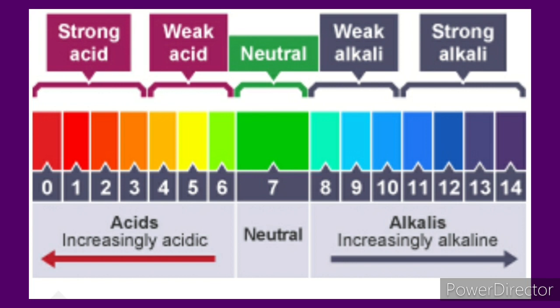The pH scale ranges from 0 to 14. A pH of 7 is neutral, a pH less than 7 is acidic, and a pH more than 7 is basic. As the pH value increases from 7 to 14, it represents a decrease in H3O+ (hydronium) ion concentration, or an increase in OH⁻ (hydroxide) ion concentration in the solution.